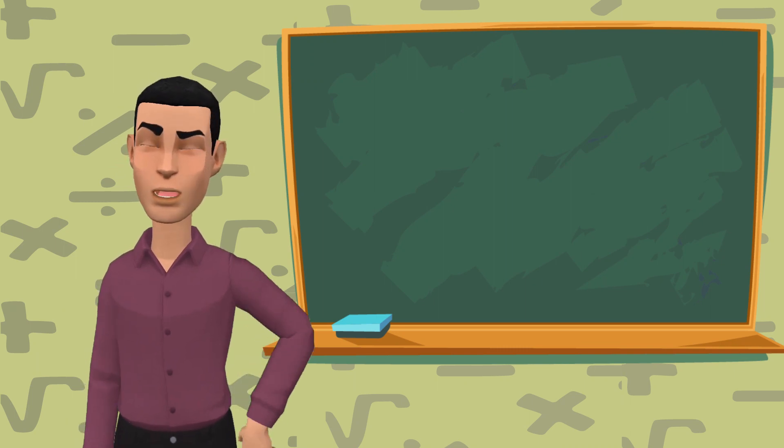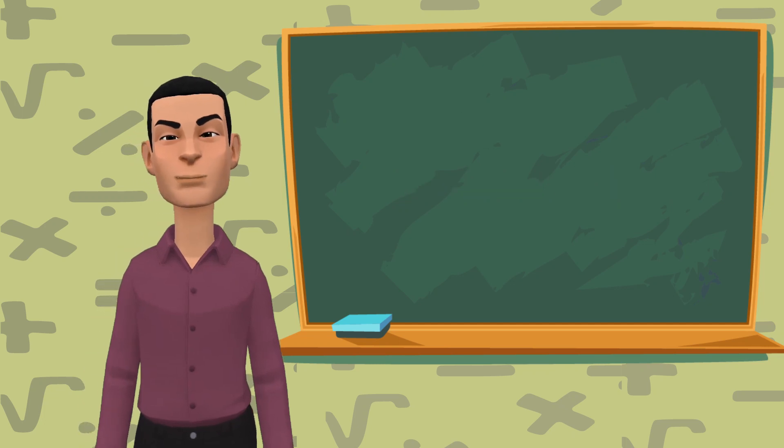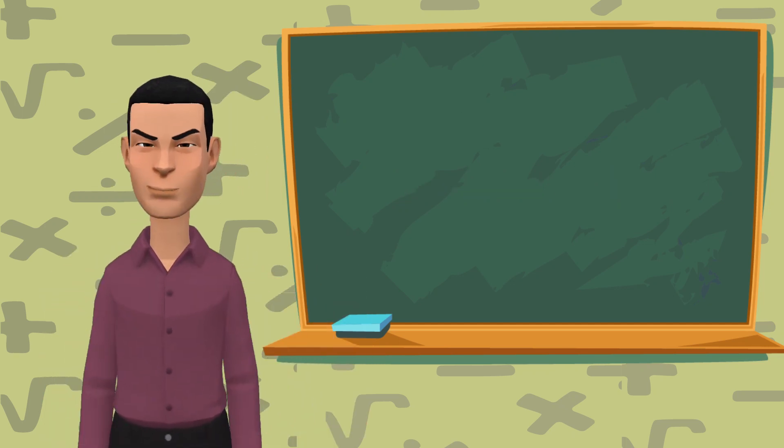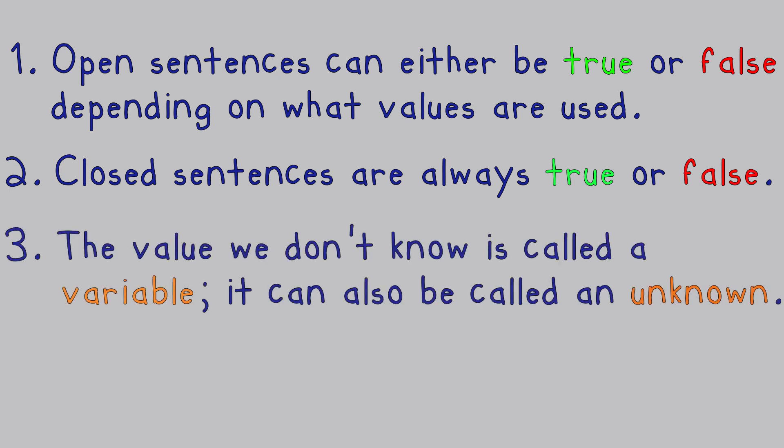Now we have come to the end of this lesson. Let's recall some of the things we've learnt so far, shall we? Right then. One: Open sentences can either be true or false, depending on what values are used. Two: Closed sentences are always true or false. Three: The value we don't know is called a variable. It can also be called an unknown.